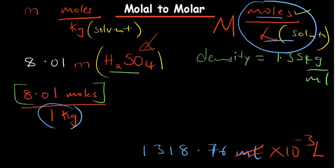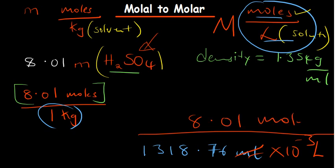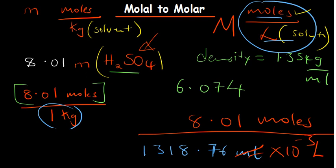Now we divide the number of moles — 8.01 moles, based on our assumption of 1 kilogram of solvent — by the volume in liters to get the molar concentration.